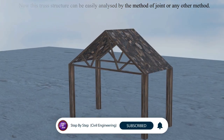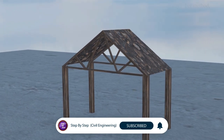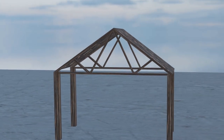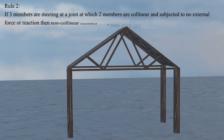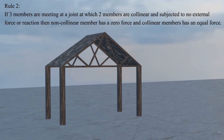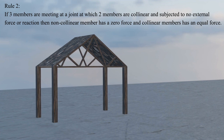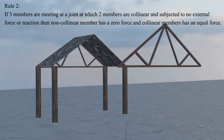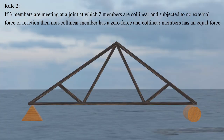The second rule to find the zero force member is: if three members are meeting at a joint, out of which two are collinear, and the joint is subjected to no external force or reactions, then the non-collinear member has zero force and the collinear members have equal force. To understand this rule we have a roof truss model.